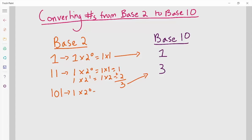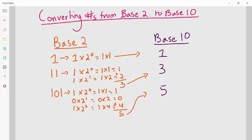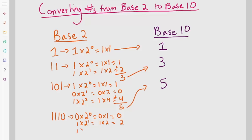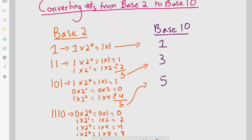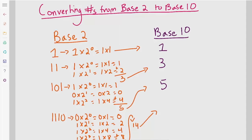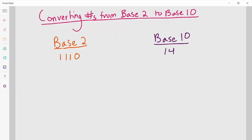For 1, 0, 1: in the first place we have 1 times 2 to the 0, which is 1. Then we have 0 times 2 to the 1, so that's nothing. Then in the next position, we have 1 times 2 to the second — that's 4. So 4 plus 1 equals 5. Now let's take 1, 1, 1, 0. That's 0 times 2 to the 0 — zero. 1 times 2 to the first — 2. Plus 1 times 2 to the second — 4. So 2 plus 4 is 6. Then 1 times 2 to the third — 8. So 2 plus 4 plus 8 equals 14. So 1, 1, 1, 0 equals 14. And if we add 1 to make it 1, 1, 1, 1, 1, that's 14 plus 1 equals 15.